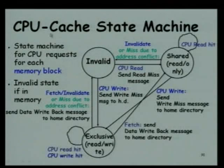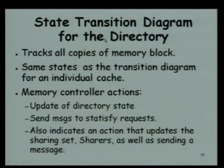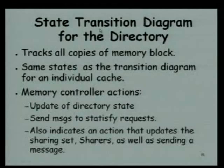This was the CPU state machine — the state machine maintained at the CPU. We can do a similar thing for the directory. The directory also tracks all memory blocks with the same state transition diagram for each block. Three states will be there for each block. The memory controller actions can be to update the memory, update the directory state, and send messages to satisfy requests such as fetch.